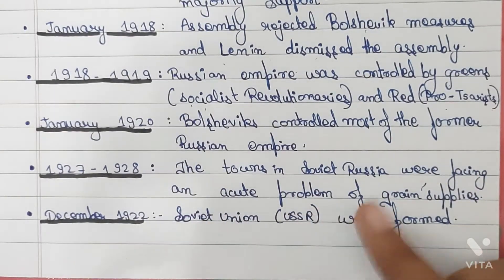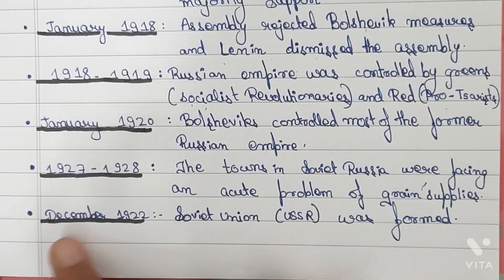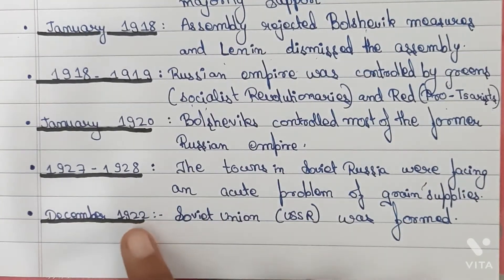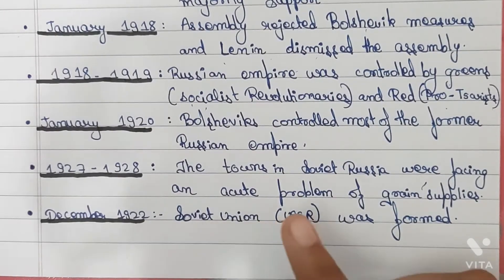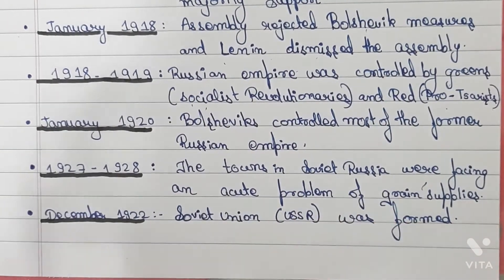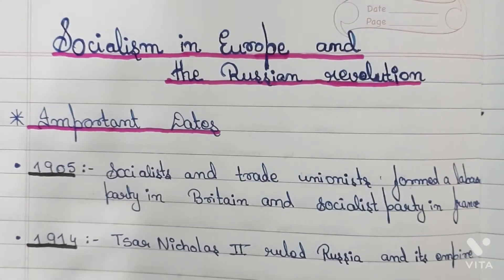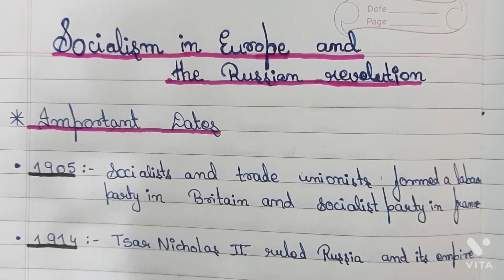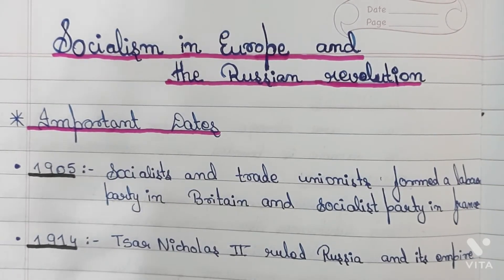1927 to 1928: the towns in Soviet Russia were facing an acute problem of grain supplies. December 1922: the Soviet Union, that was the USSR, was formed. So these were some of the most important dates from the second chapter of History Class 9, Socialism in Europe and the Russian Revolution.